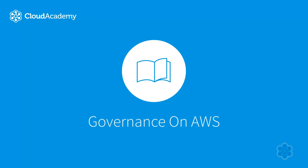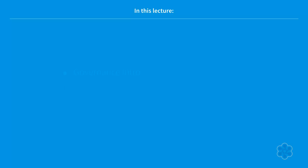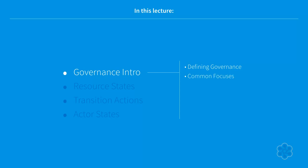Welcome to the Cloud Academy course on Governance on AWS. In this lecture, we're going to be doing an introduction to governance, covering how we define governance, common focuses of governance, the goals we're trying to achieve, modern challenges associated with doing governance in a cloud like Amazon Web Services, different steps to ensure we're following a governance process, different resources we can govern, and a brief summary of what we'll learn in the course.